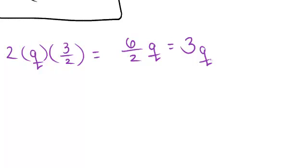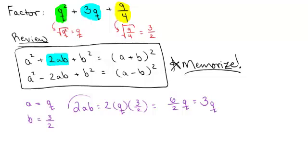I know for sure that this trinomial is a perfect square trinomial because the a² term is a perfect square. The 9/4 was a perfect square because I took the square root of 9/4 and I got 3/2, and the 3q fit this model of 2ab.